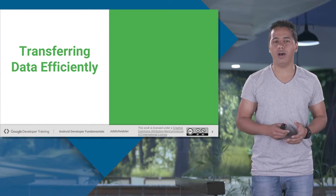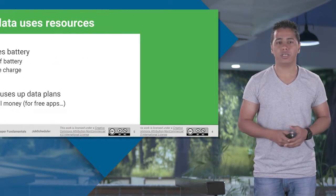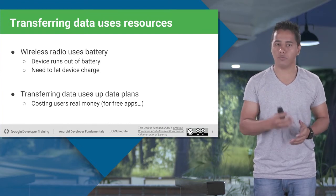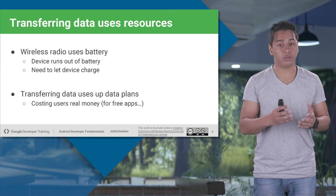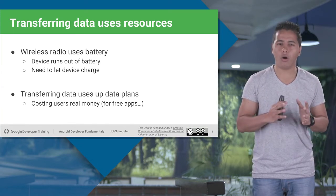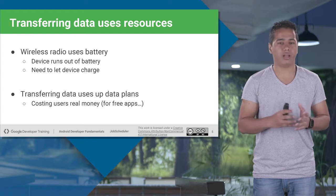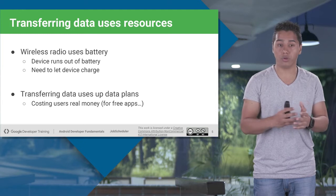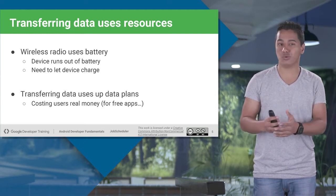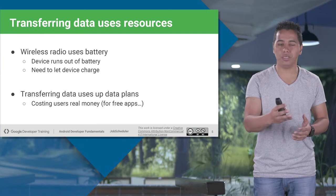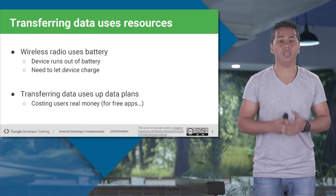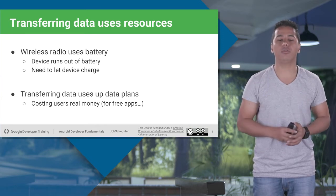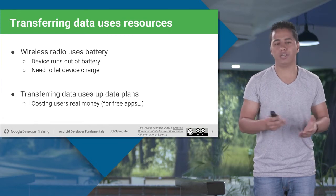Let's talk about how exactly we can transfer data efficiently first. Whenever you transfer data, it does use your resources. Your wireless radios use battery. Your smartphone comes with plenty of wireless radios — like for your mobile network, there is a wireless radio; there is a wireless radio for your Wi-Fi, known as Wi-Fi radio. Same goes with GPS or Bluetooth. So they drain out your battery. And of course, if you are downloading some data with your data plans, it costs money to the user.